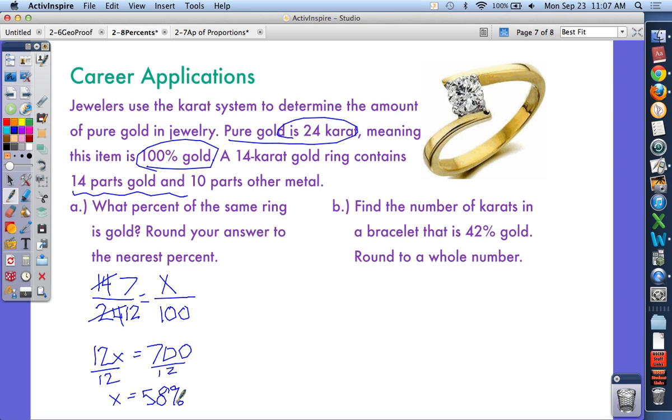On the next one, find the number of carats in the bracelet that is 42% gold. Round to the nearest whole number. I want to know how many carats need to make it 42% gold. So now I know 42 out of 100. I don't know how many carats, but I know the whole is still 24.